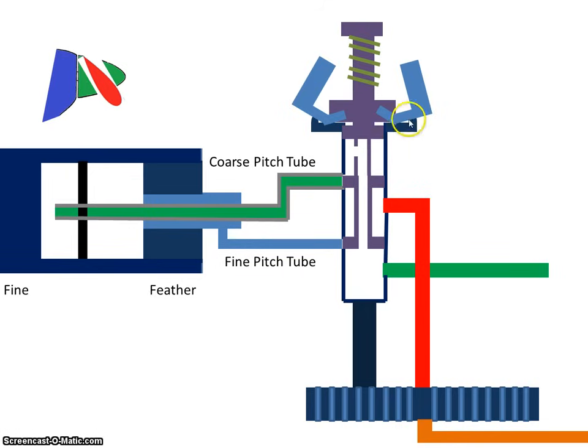So the centrifugal force has reduced, the flyweights collapse, and the speeder spring overcomes the effect of the flyweights. So the pilot valve moves down.